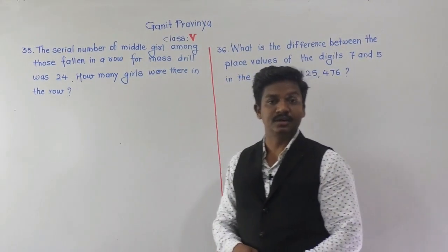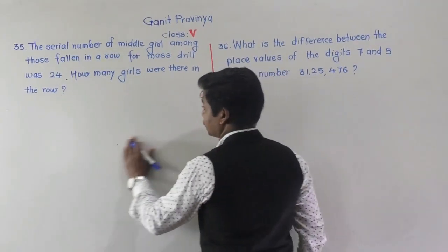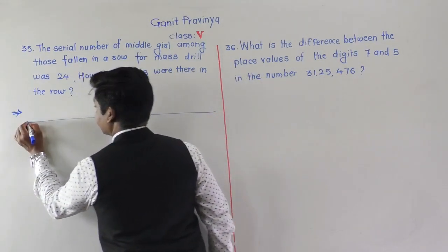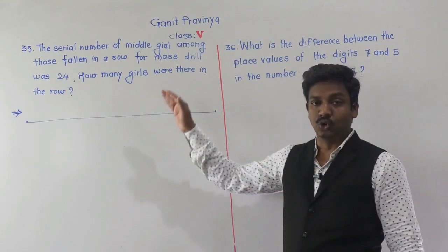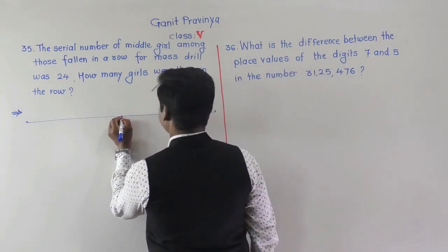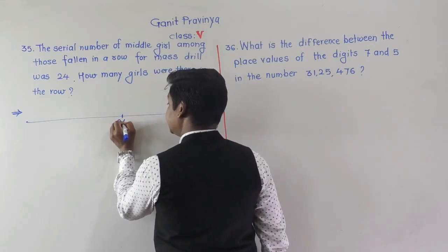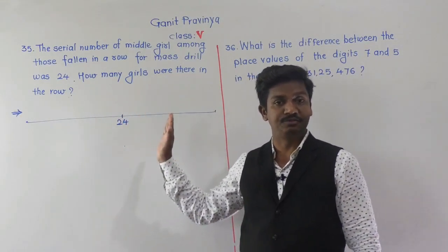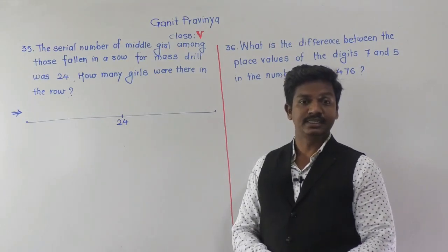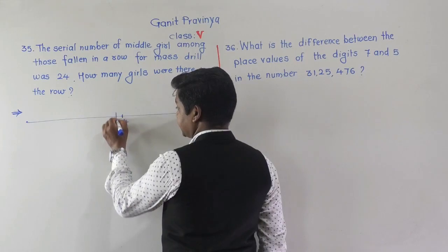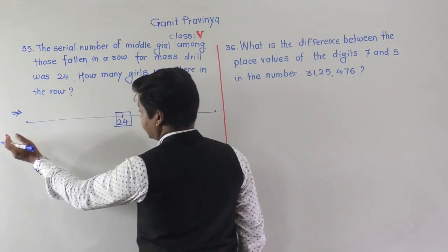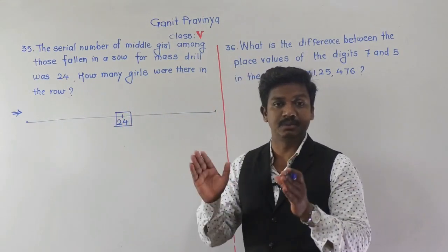We have seen the same type of examples before. There is one row of girls gathered for mass drill. The serial number of the middle girl is 24. Since she is in the middle, there are equal numbers of girls before and after her. Her roll number is 24, so before her the roll numbers go from 1 up to 23, meaning there are 23 girls before her.